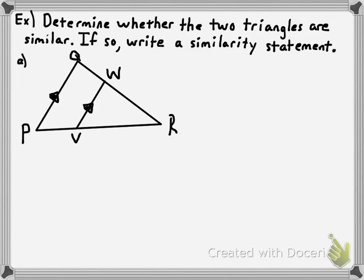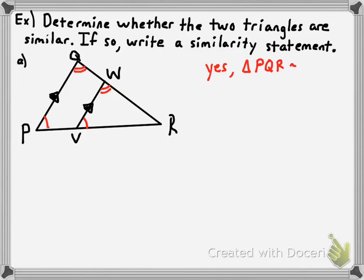We can actually prove these triangles have three pairs of congruent angles. Notice that the two triangles have a pair of parallel sides — segment PQ is parallel to segment VW. That means the corresponding angles formed by those parallel lines and the transversals must be congruent: angle P is congruent to angle WVR, and angle Q is congruent to angle VWR. Based on that alone, the triangles are similar. So triangle PQR is similar to triangle VWR by the Angle-Angle similarity postulate.